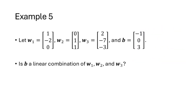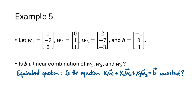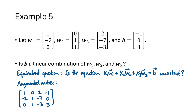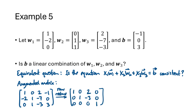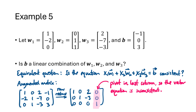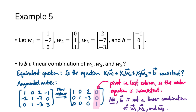Let's look at another example. Given vectors w1, w2, w3, and a vector b, we ask: is b a linear combination of w1, w2, and w3? We write the equivalent question — whether x1*w1 + x2*w2 + x3*w3 = b is consistent — and set up and row reduce the augmented matrix. Looking at the reduced matrix, there is a pivot in the last column, which means the vector equation is inconsistent. Therefore, b is not a linear combination of the w vectors.